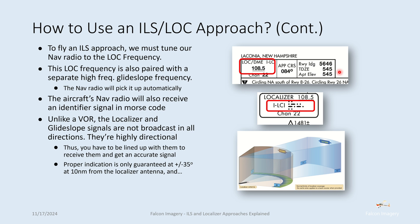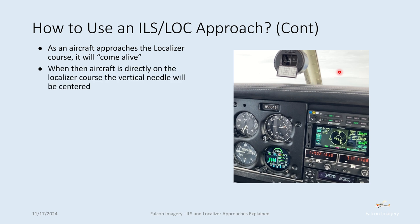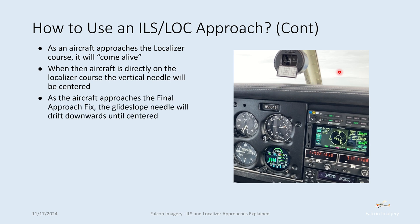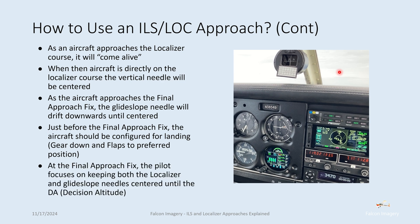A proper localizer signal is only guaranteed at plus or minus 35 degrees when 10 nautical miles out from the localizer antenna, and plus or minus 10 degrees at 18 nautical miles out. As the aircraft approaches the localizer course, the needle will come alive; when directly on course, the vertical needle will be centered. As the aircraft approaches the final approach fix, the glide slope needle drifts down until centered. Just before the final approach fix, the aircraft should be configured for landing — gear down, flaps set, before-landing checklist complete. At the final approach fix, the pilot keeps both localizer and glide slope needles centered until decision altitude. On a localizer-only approach, only the vertical needle is tracked since only lateral guidance is provided.